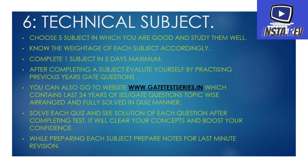For technical subjects, choose any 5 subjects in which you are good and study them well. Instead of studying all subjects, just study 5 that have higher weightage and study the rest at an average level. Note the weightage of each subject and plan accordingly. Complete one subject in a maximum of 5 days. After completing a subject, evaluate yourself by practicing previous year GATE questions. You can also visit www.gatetestseries.in, which contains the last 25 years of IES and GATE questions arranged topic-wise and fully solved in a quiz format. Solve each quiz, see the solution, and it will clear your concepts and boost your confidence. While preparing each subject, prepare notes for last-minute revision.